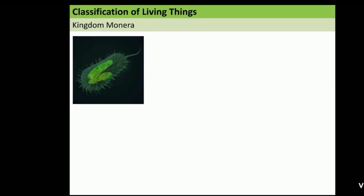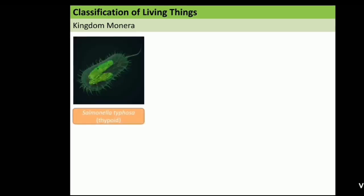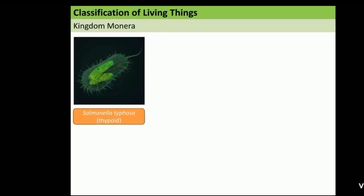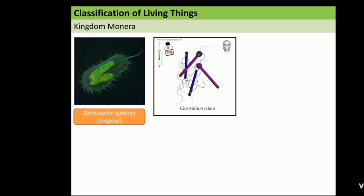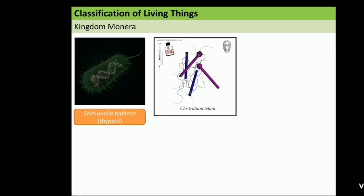Bacteria is divided become the good bacteria and the bad bacteria. This is the example of bad bacteria. Start from Salmonella typhoosa. This is the kind of bacteria that can cause typhoid disease. And then, the second is Clostridium tetani. It can cause tetanus disease.